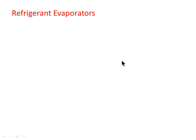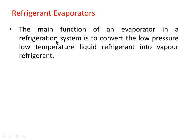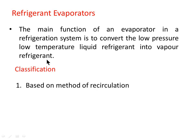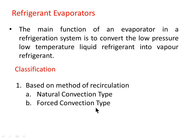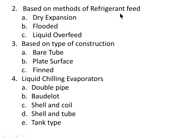Next are refrigerant evaporators. The main function of an evaporator in a refrigeration system is to convert low pressure, low temperature liquid refrigerant into vapor refrigerant. Evaporators are classified based on method of recirculation into natural convection and forced convection types; based on method of refrigerant feed into dry expansion, flooded, and liquid overfill types; and based on construction into bare tube, plate surface, or finned types. Liquid chilling evaporators include double pipe, Baudelot, shell and coil, shell and tube, and tank type evaporators.